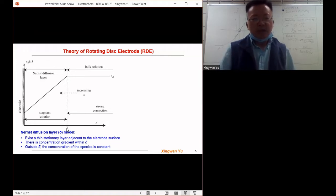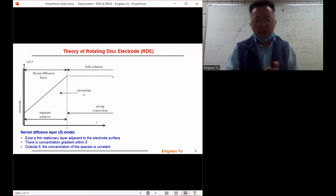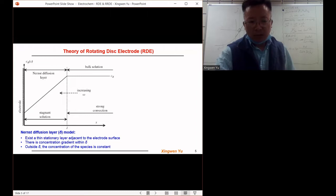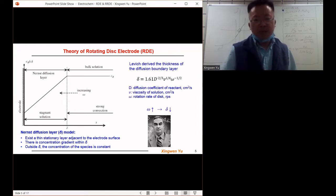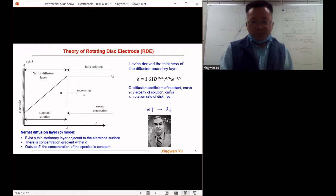The Nernst diffusion layer plays a central role for the theory of the rotating disk electrode. We need to thank a great scientist named Levich, who developed the theory of the rotating disk electrode. He derived the mathematical expression for the Nernst diffusion layer, delta.